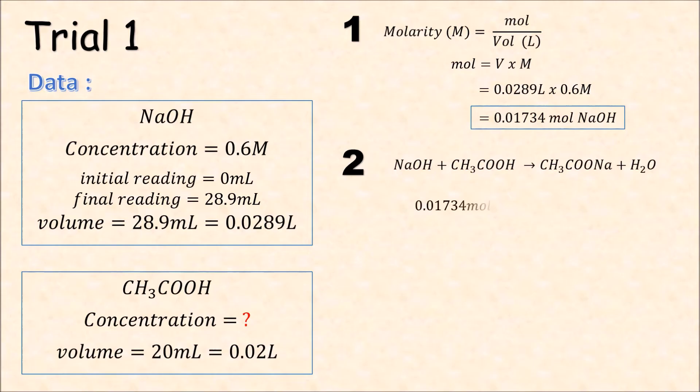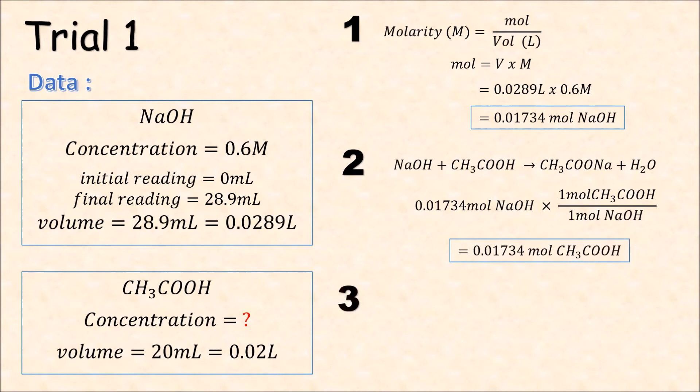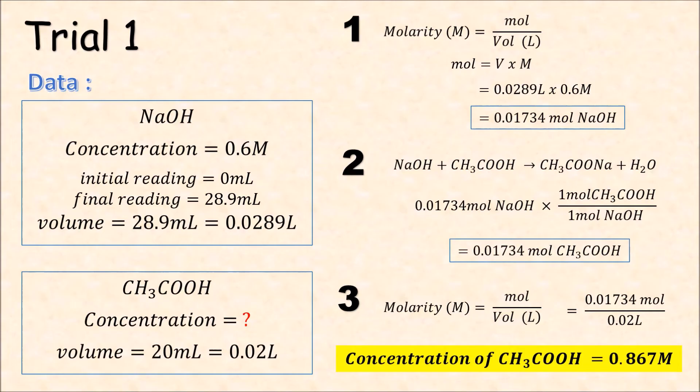Next, we will get the mol of acetic acid. From our solution, we have 0.01734 mol of acetic acid. And the molarity, we will divide number of mol divided by the volume. So, we have 0.867 molar.